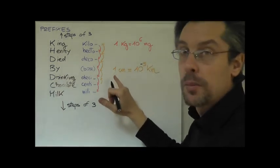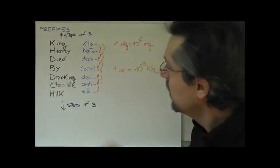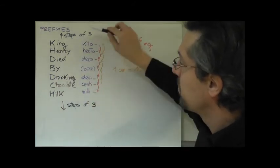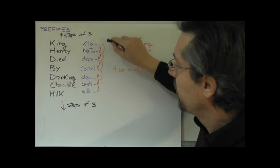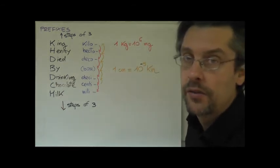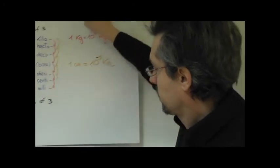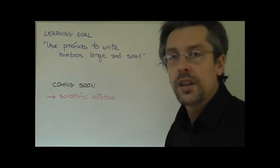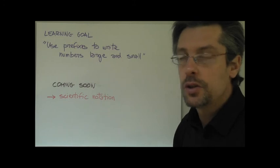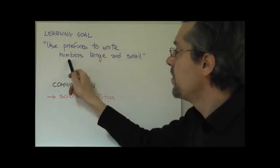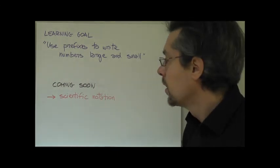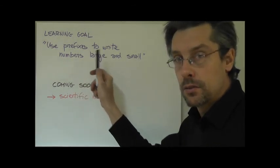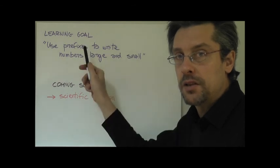Again, there are still more prefixes, upwards and downwards, but remember, from after the kilo or below the milli, you have to go by steps of 3. So, what's the learning goal of today's lesson? By the end of this lesson, you should be able to use prefixes to write numbers large and small. As I told you, the next thing we're going to see is how to do the same thing, writing numbers large and small, but not by using prefixes, but by using what we call scientific notation.